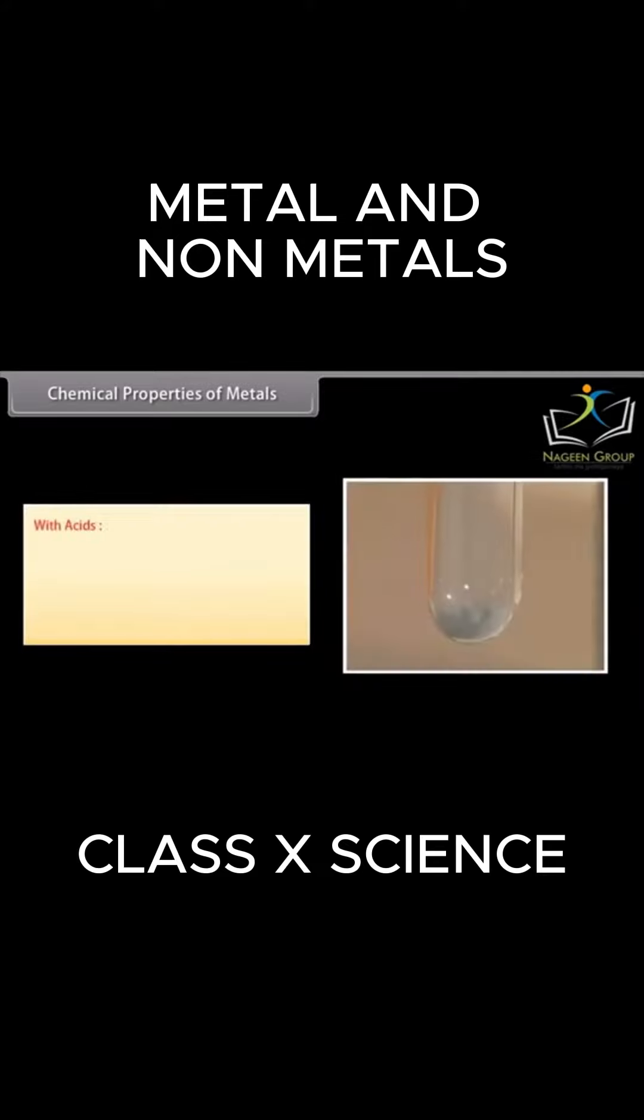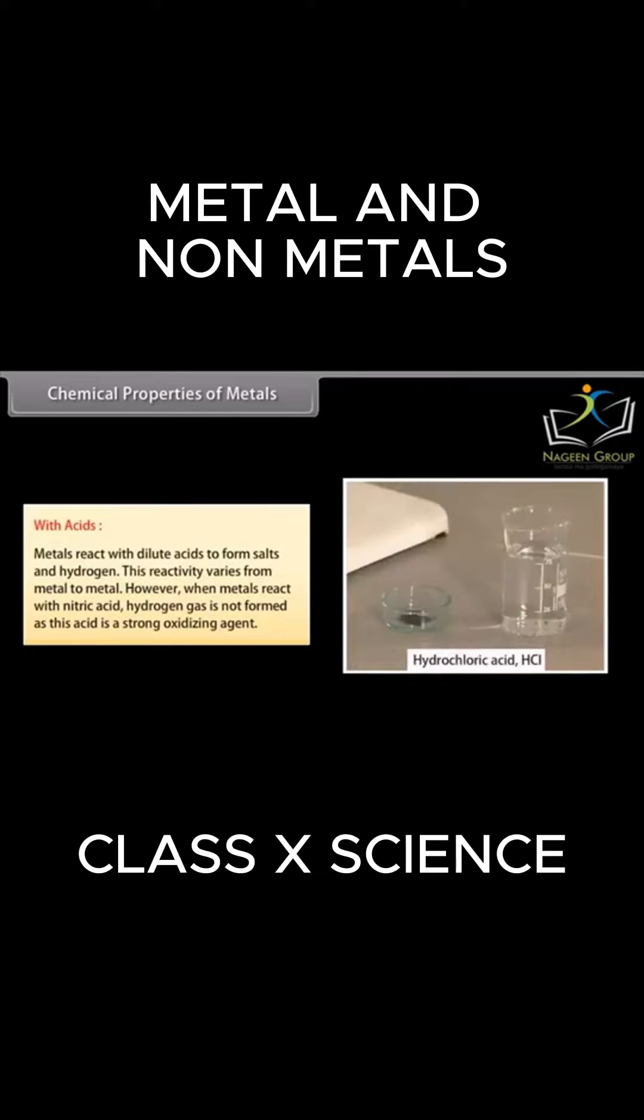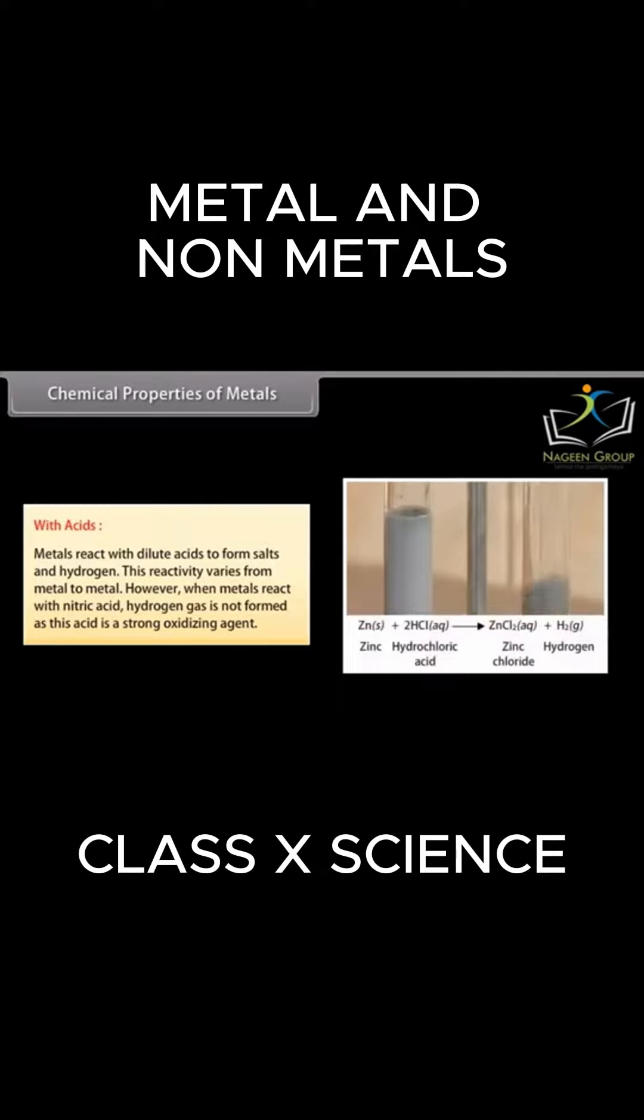With acids, metals react with dilute acids to form salts and hydrogen. This reactivity varies from metal to metal. However, when metals react with nitric acid, hydrogen gas is not formed as this acid is a strong oxidizing agent.